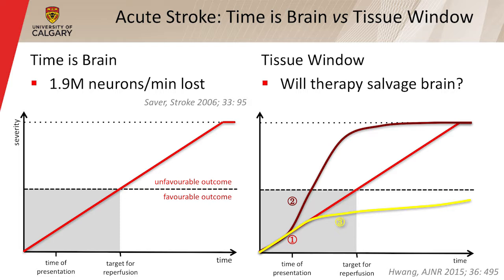So, acute stroke — this is the physicist-engineer's view of stroke, and the catchphrase is 'time is brain.' Stroke is an acute event; we need to treat it very rapidly. Severity is on the vertical axis, time on the horizontal axis. Basically, severity goes up with time. It reaches a point where you have an unfavorable outcome, defining the maximum target for treatment. Your patient presents somewhere between zero and that maximum time, and the approved treatment is thrombolysis using TPA.